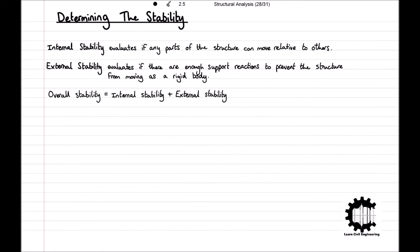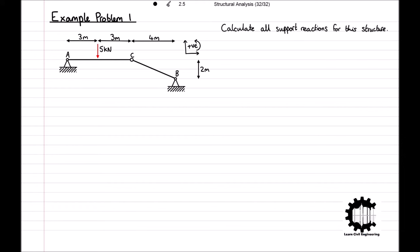We can now determine the total stability of a structure by summing the external and internal stabilities. But again, remember that an externally unstable structure will always be unstable, regardless of the internal stability. So let's have a look at an example problem where we must calculate the support reactions for a structure that is externally indeterminate but internally unstable. The structure is being supported by hinge supports at point A and B, and therefore has a horizontal and vertical support reaction at both of these points. Working out the degree of external indeterminacy, we get alpha_E is equal to four minus three, which equals plus one.